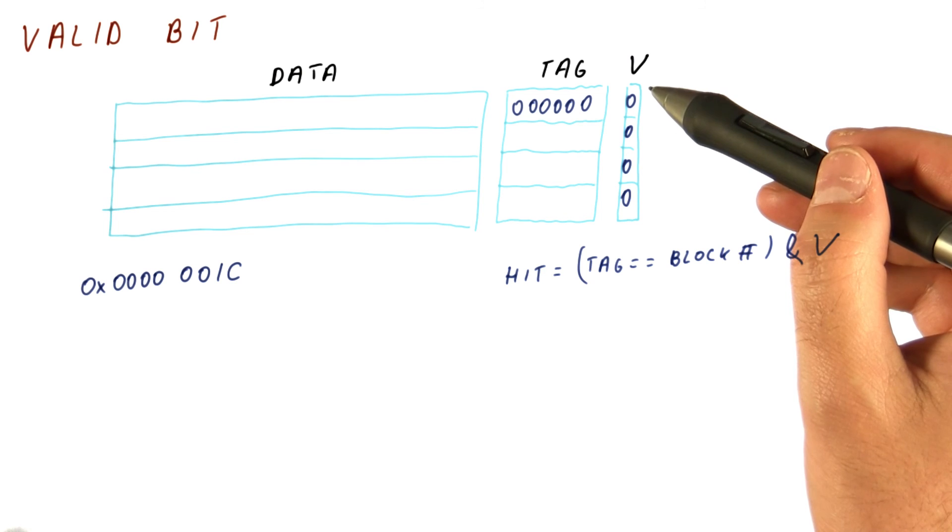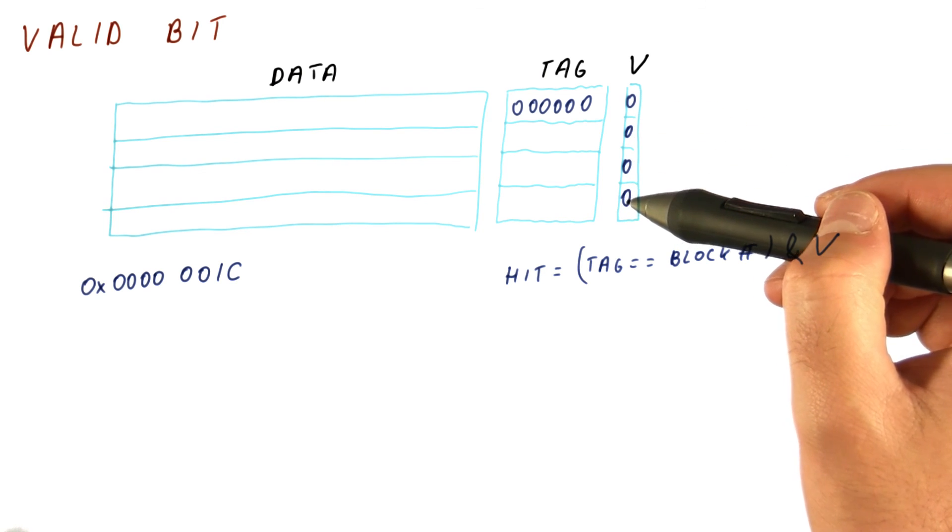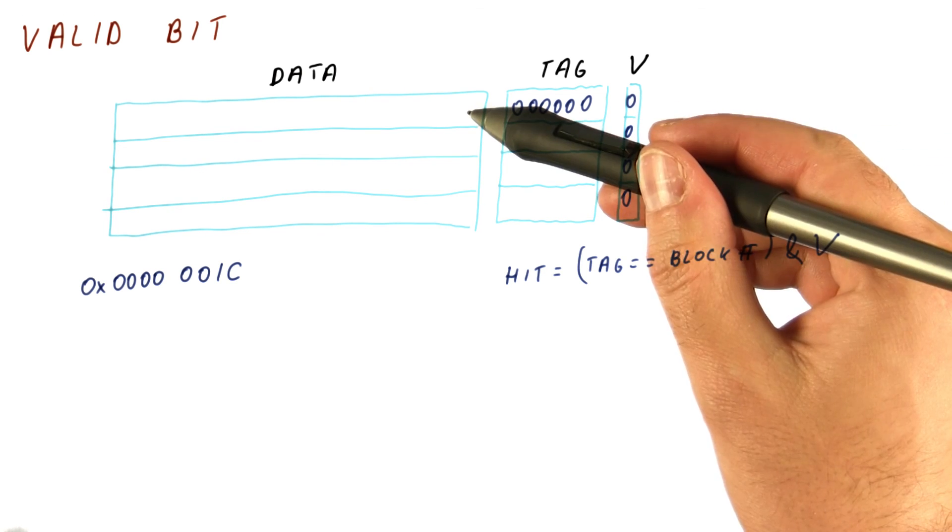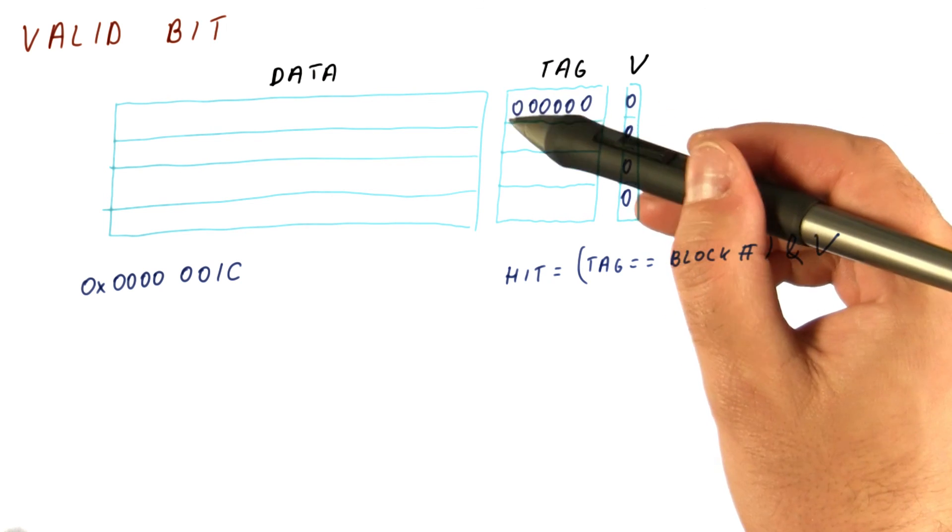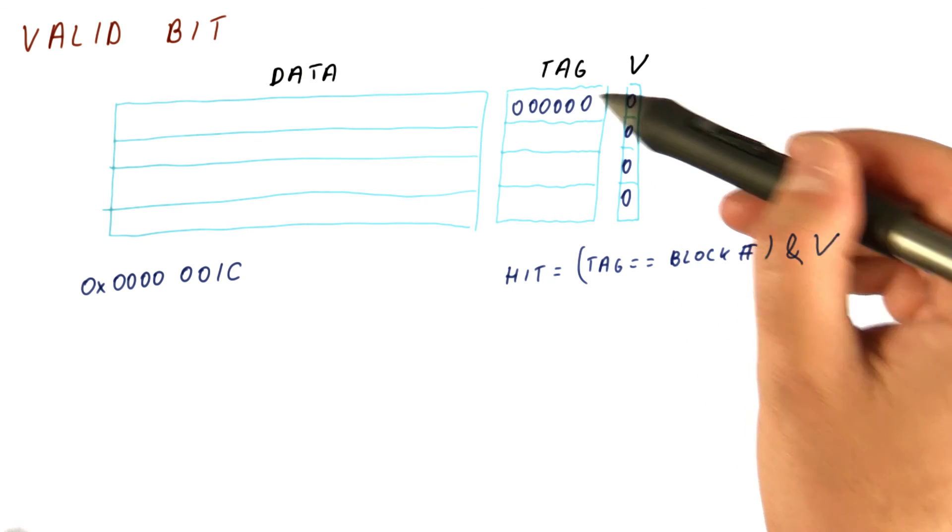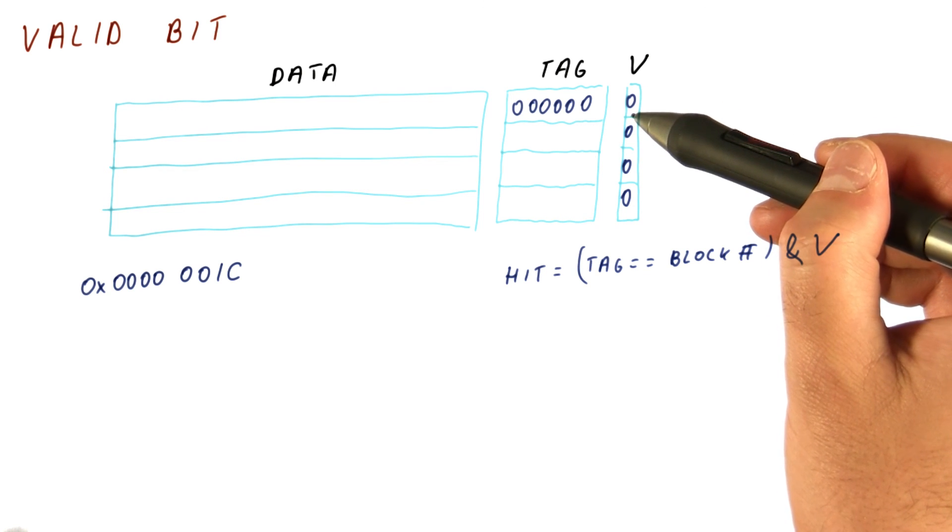So when we boot up the processor, we set all the valid bits to zero. Then when we bring data from memory, put the data here, set the tag to correspond to the block number, and at that time we also set the valid bit to one.